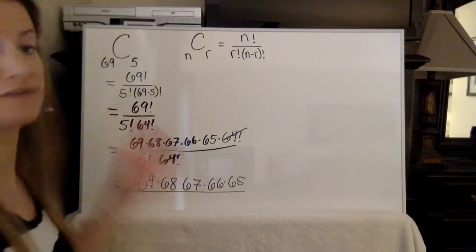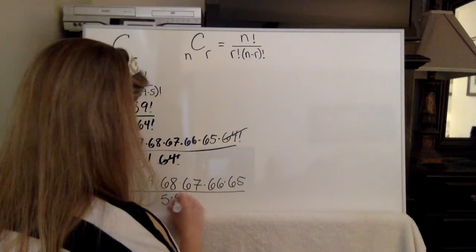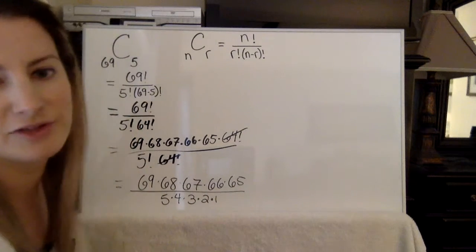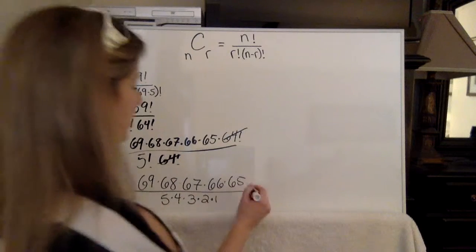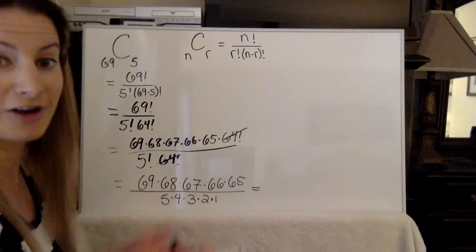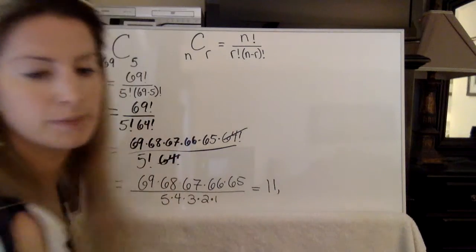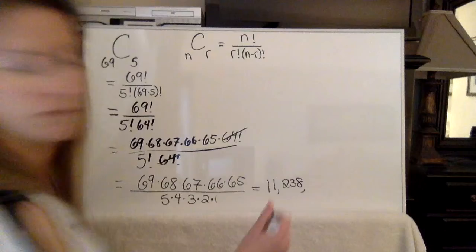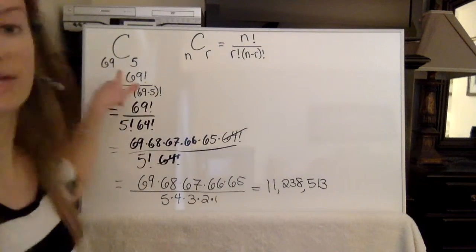Now remember 5 factorial is just 5 times 4 times 3 times 2 times 1. So then we end up simplifying this and when we actually do the math in our calculator we get 11,238,513. Boom, so that's what 69 choose 5 is.